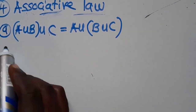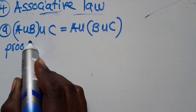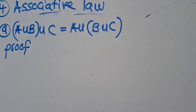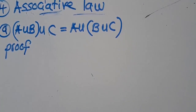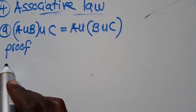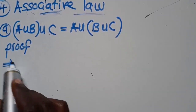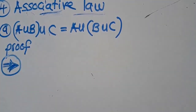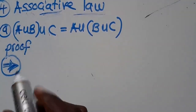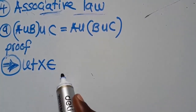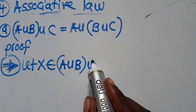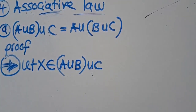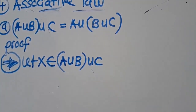So how do we prove this? You start by writing on this side. Let X be a member of (A∪B)∪C. This is what you are actually doing — this is the first thing you write.